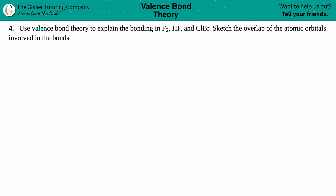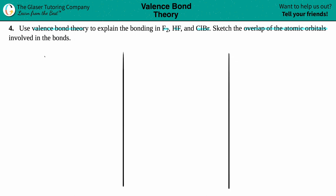Number four: use valence bond theory to explain the bonding in F2, H2, and ClBr, and sketch the overlap of the atomic orbitals involved in the bonds. There are three things we need to do here. I'm going to split the screen into three components: F2 on the left, HF in the middle, and ClBr on the right.